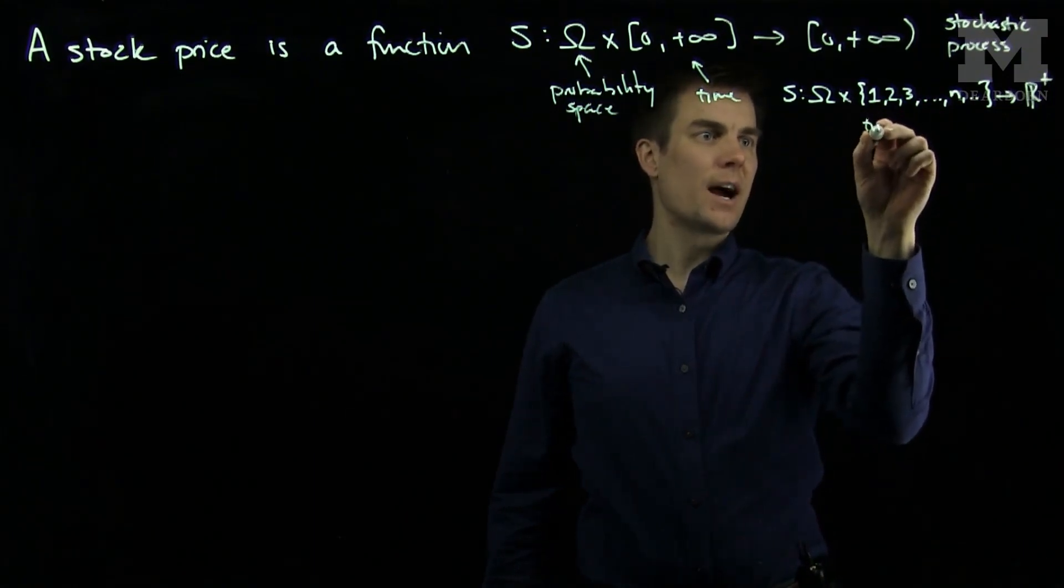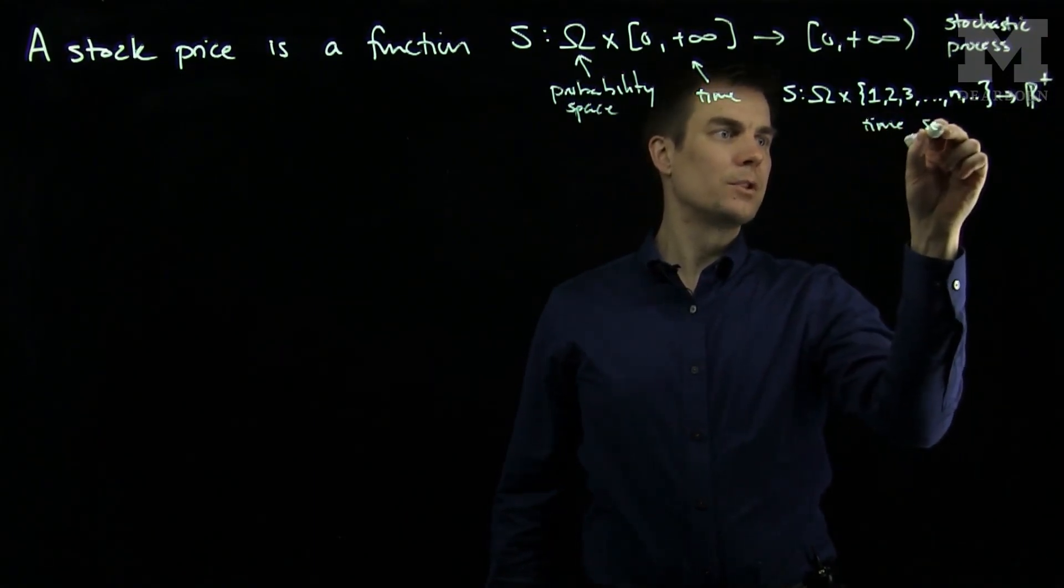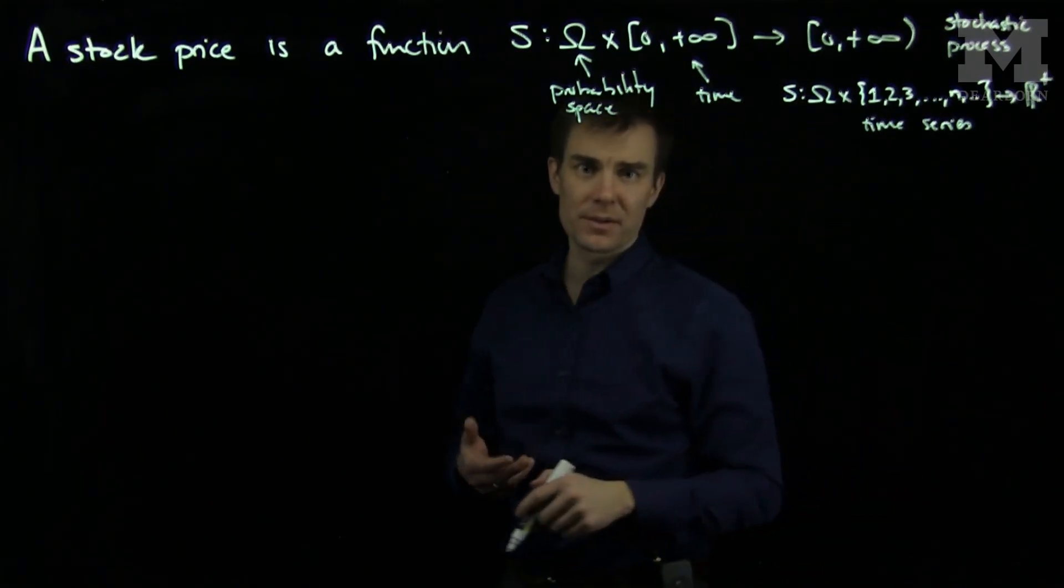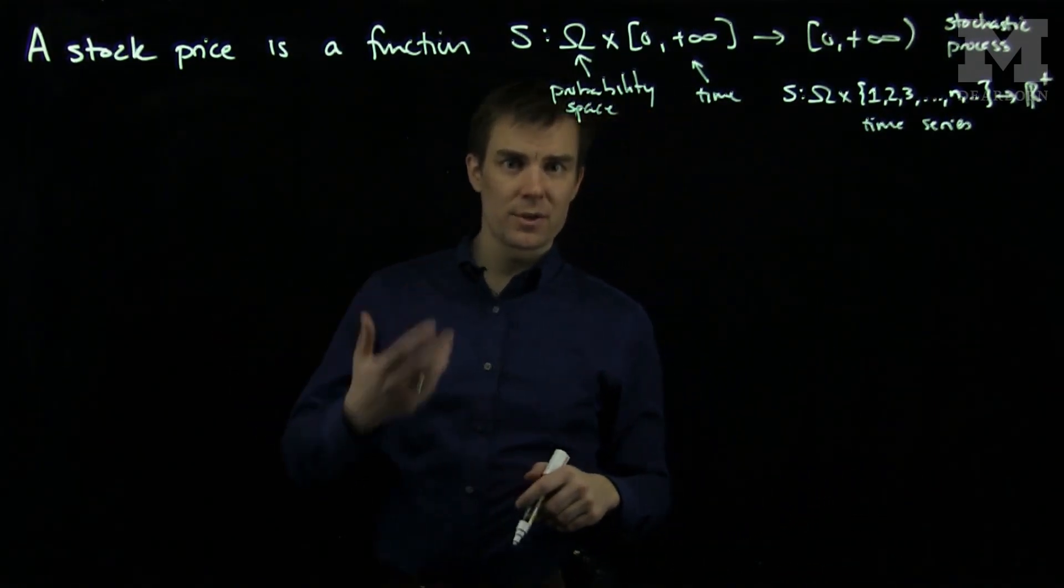In this case it's referred to as a time series. Different terminology for the same thing. A time series will have discrete increments and for a stochastic process you'll have continuous increments.